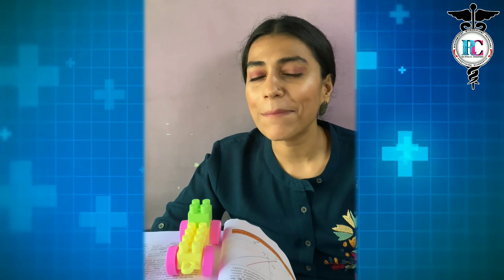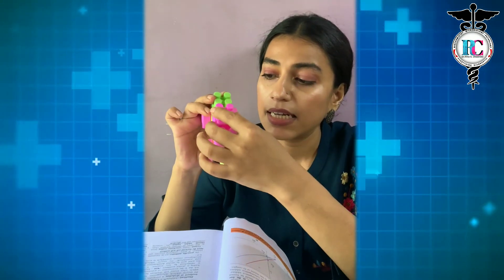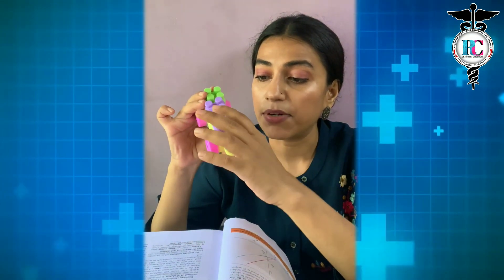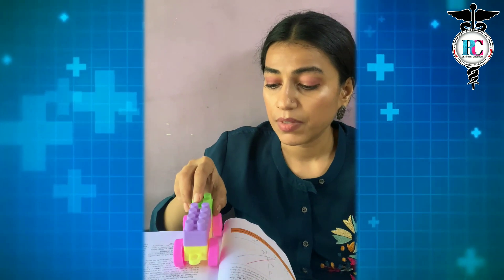The first reversible inhibitor is the competitive inhibitor. As the name suggests, the inhibitor competes — it competes with the substrate. If this pink piece is the substrate, it exactly fits on the enzyme at the active site. But in competitive inhibition, the substrate is replaced by the enzyme inhibitor, which binds at that same site. When this happens, the Vmax — maximum velocity — remains unchanged, but the Km value increases.